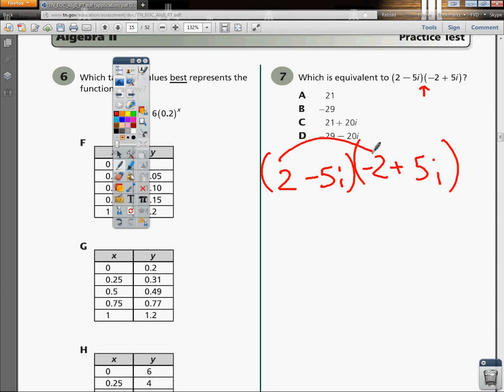So I'm going to do my 2 times negative 2, end up with negative 4, of course. Then I want to do my 2 times 5, so I end up with plus 10i.